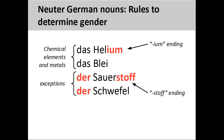Most of the chemical elements and metals are neuter, such as 'Helium' (helium) and 'Blei' (lead). Notable exceptions are nouns ending in '-stoff,' such as 'Sauerstoff' (oxygen), and a few other elements and metals such as 'Schwefel' (sulfur). A good rule to follow is that if the noun ends in '-eum,' it will be neuter.